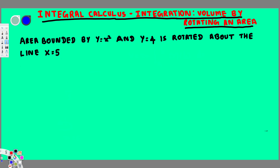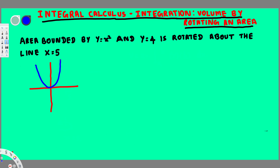To do this problem, first we have to graph it. The graph is going to have a parabola opening up — since this is positive with no addition or subtraction, it passes through the origin. The second curve is y equals 4, which is a horizontal line passing through y equals 4.